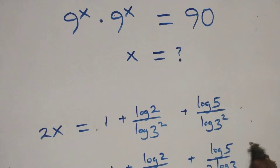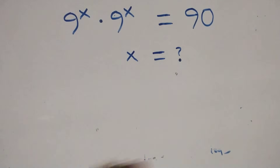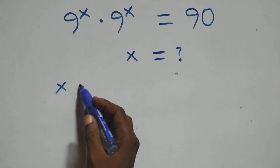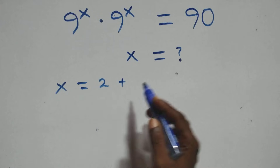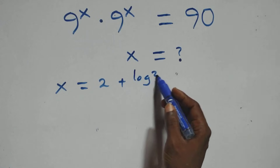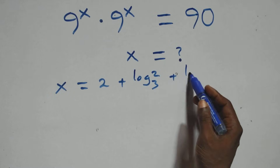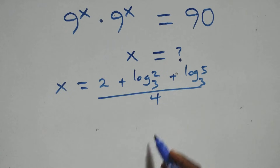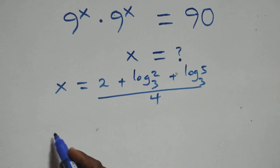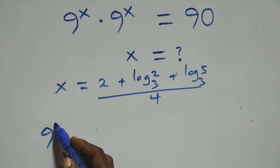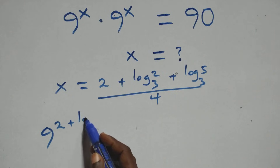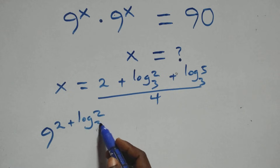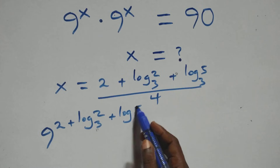Now let's check whether this value satisfies the original problem — we substitute the value of x. We get 9 raised to the power of (2 plus log base 3 of 2 plus log base 3 of 5) over 4.